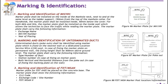Number one: marking and identification of manhole and handhole. Marker plates shall be installed on the inside of the manhole neck next to the same level as the ladder spoke — 150 mm from the top of the manhole collar. For handhole, the marker plates shall be installed inside 50 mm below the cover. For both manhole and handholes, the marker plate shall be installed on the inside wall which allows the technician to face the traffic while reading the marker plate.